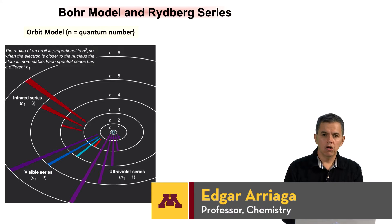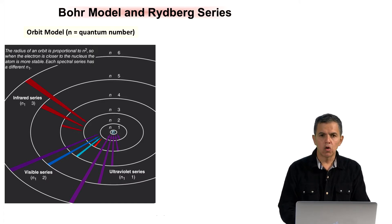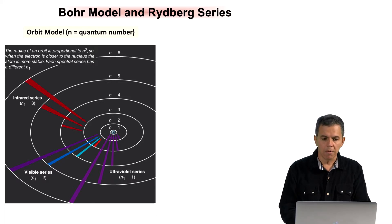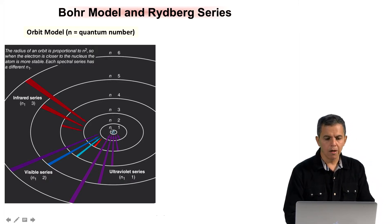We are going to review the concept of the Bohr model and the Rydberg series. As you can see in this slide, the Bohr model assumes that electrons around the nucleus travel in a very well-defined orbit. Each orbit is associated with a quantum number n, where n equals 1 is the orbit closest to the nucleus, n equals 2 is the one that follows moving away, and we continue on until n could be even infinity.